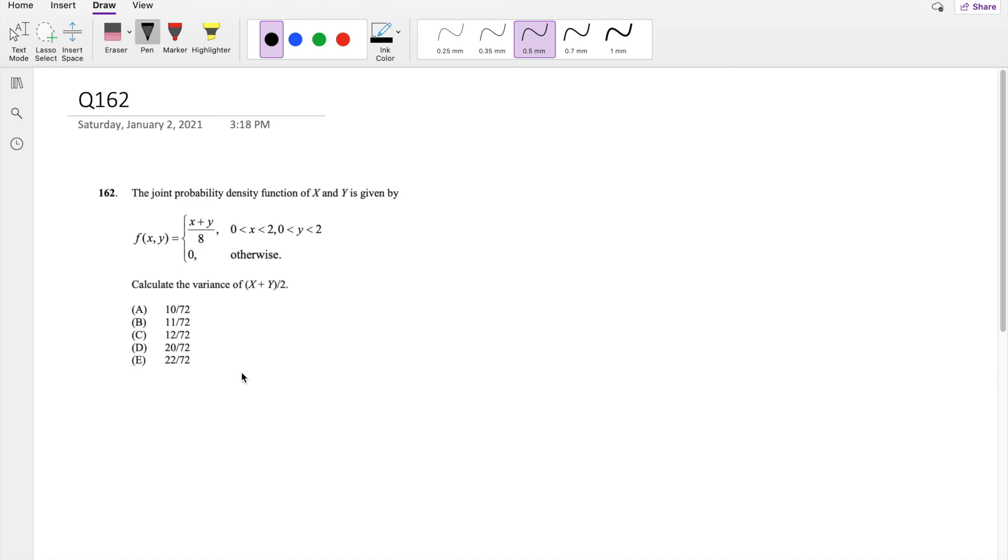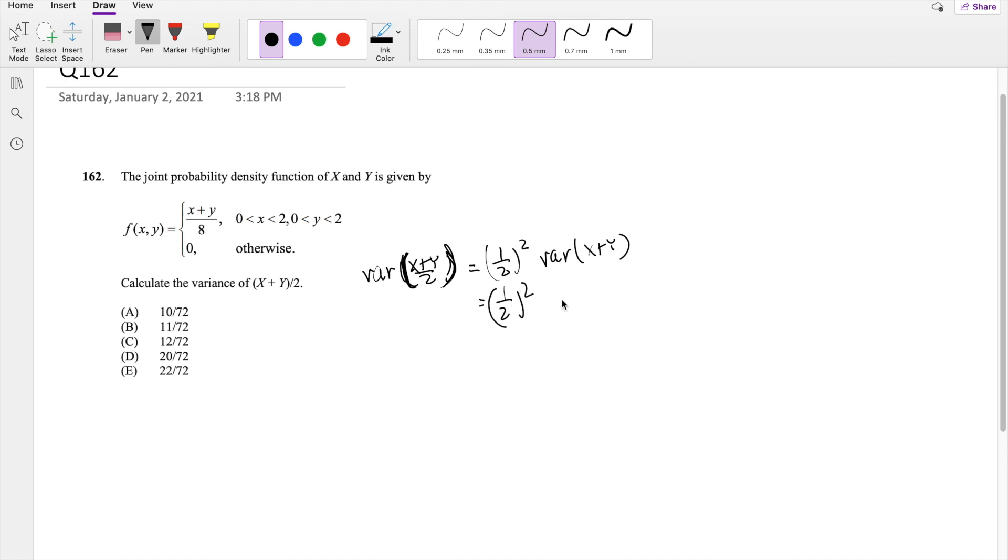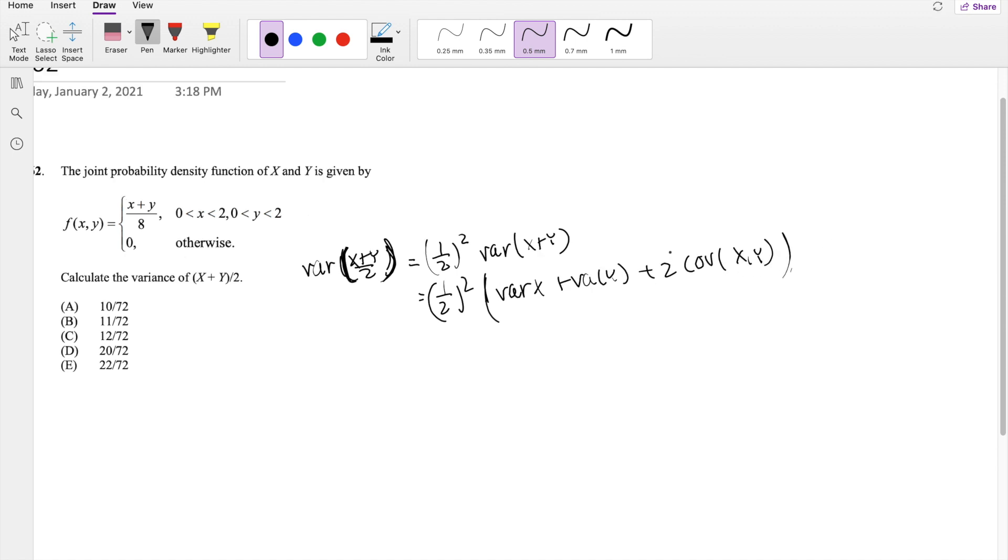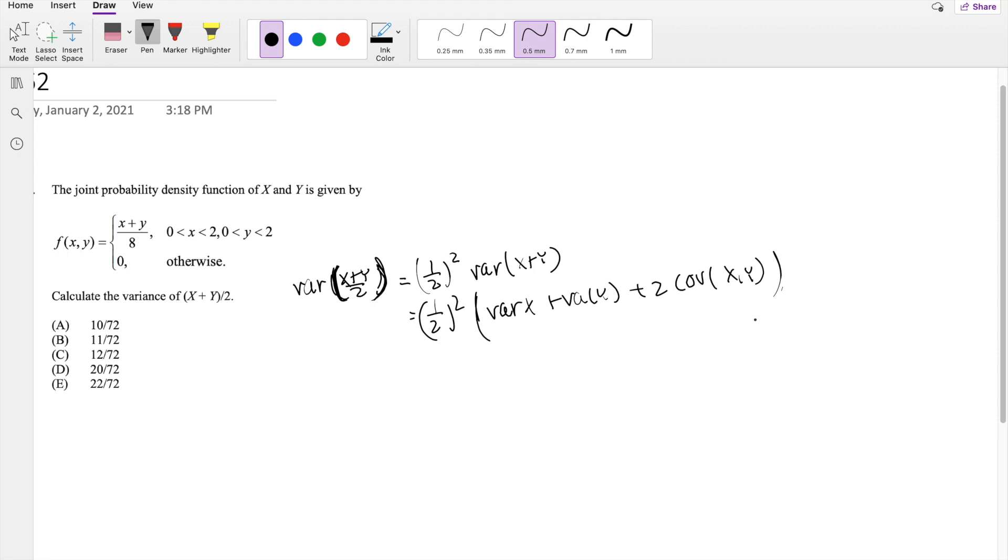They give you this probability distribution function and tell you to find the variance of x plus y divided by 2. This is equivalent to 1 half squared times variance of x plus y. Why is it squared? Because when it's inside the brackets, it's in terms of variance, and we have to square it when we bring it back to the real world.